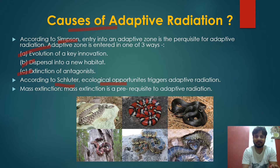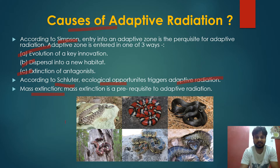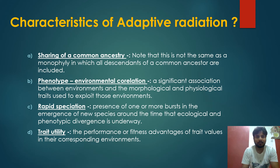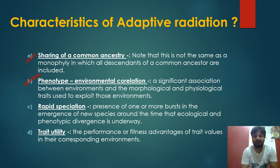Adaptive radiation is also a prerequisite for marks extinction. You can see snakes in different forms — scales, coloration, and size may differ. The characteristics of adaptive radiation include: first, sharing of a common ancestry from which multiple species have grown. Second, phenotype-environment correlation — a significant association between environments and the morphological and physiological traits used to exploit those environments.